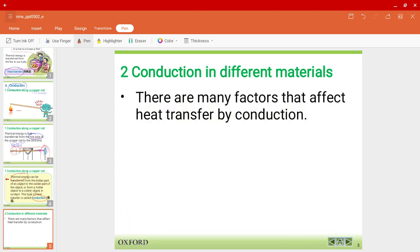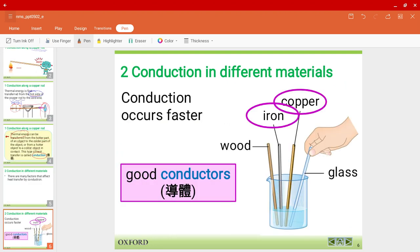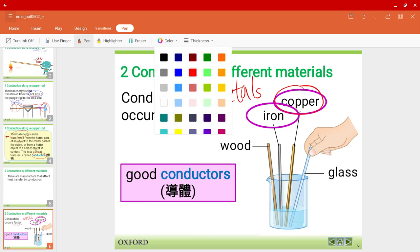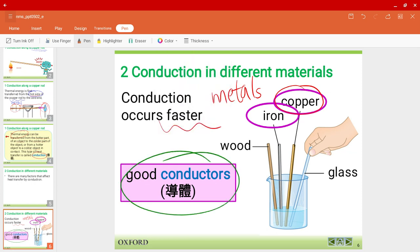Let's see some factors that would affect heat transfer by conduction. Just now we used copper. Actually in these cases when we have metals, conduction occurs faster. In processes where conduction occurs faster, we would say that they are good conductors. For example, iron, copper, or some other metals in general.